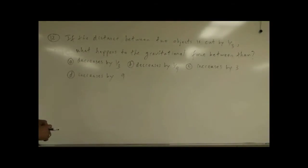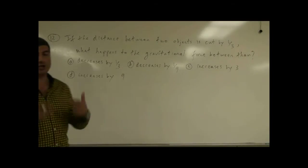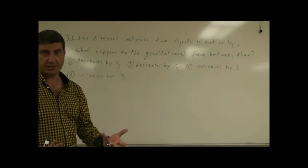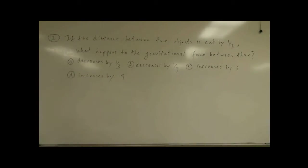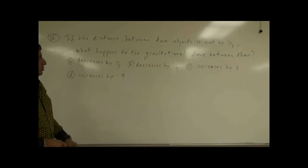Okay, question 12 asks: if the distance between two objects is cut by one-third, what happens to the gravitational force between those two objects? It decreases by one-third, choice A; decreases by one-ninth, choice B; C increases by three; D increases by nine.